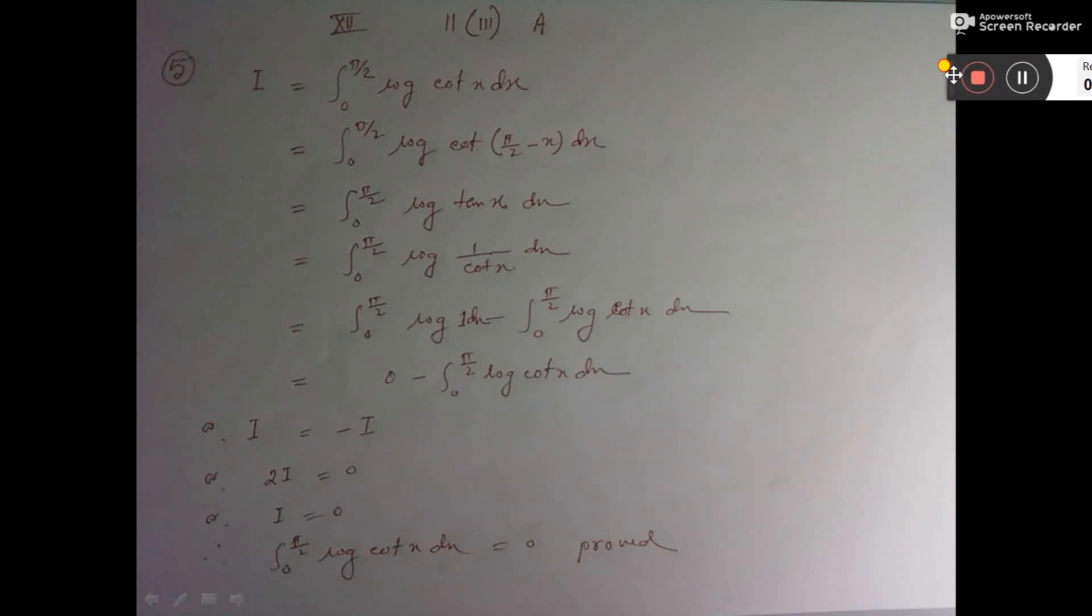I have considered i equal to this one. Now the property: 0 to a fx dx is 0 to a f(a minus x) dx. That is this minus x.